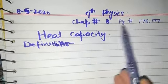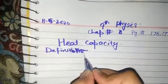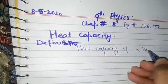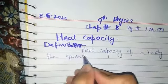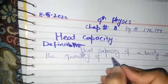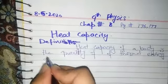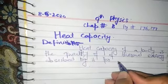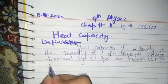Assalamu alaikum. 9th class, today we are doing chapter number 8, page number 176 and 177. Our topic is heat capacity. The definition of heat capacity is: heat capacity of a body is the quantity of thermal energy absorbed by it for one Kelvin increase in temperature.